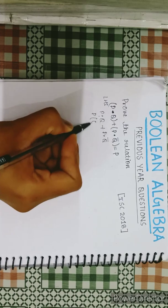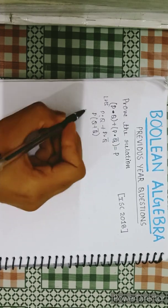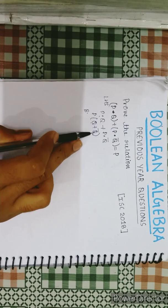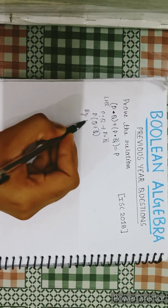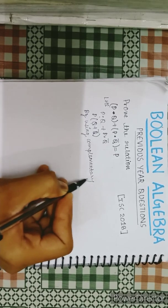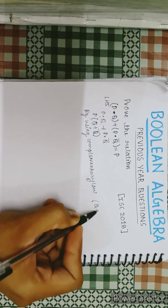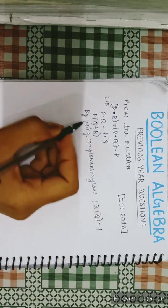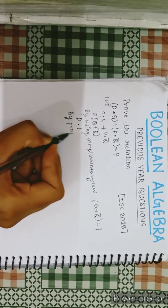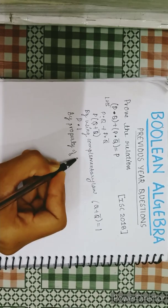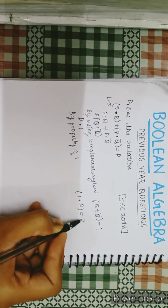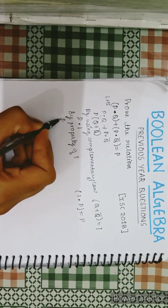Taking p common gives us p·(q + q̄). We can see the complement form of q is written here, so by the complementary law, which states q + q̄ = 1, we get p·1. Now, by the property of one, p·1 equals p.